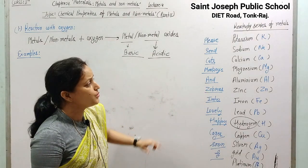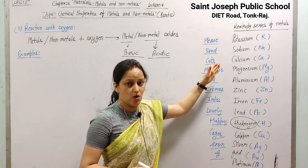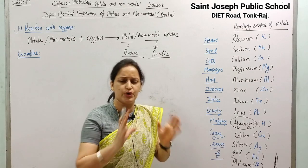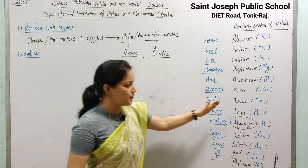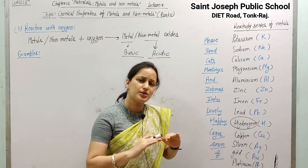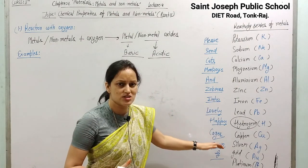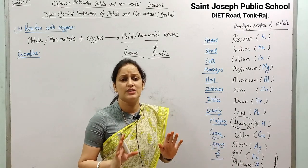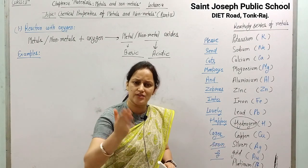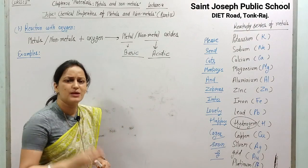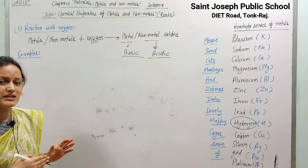The metals at the top of the reactivity series are highly reactive with oxygen — their reactions are very vigorous. Metals in the middle are moderately reactive. The metals at the bottom generally do not react with oxygen or show very little reaction.